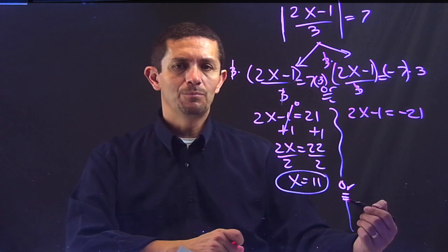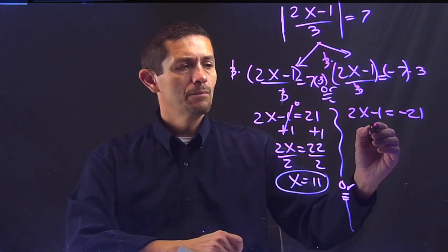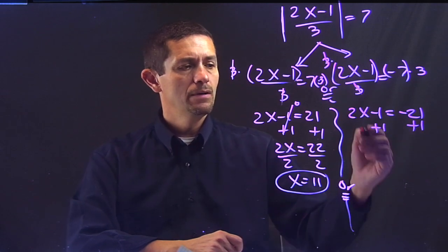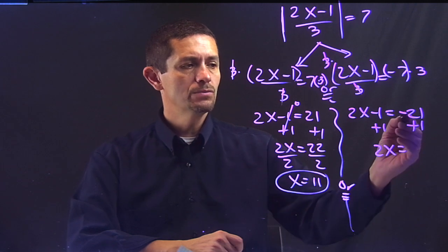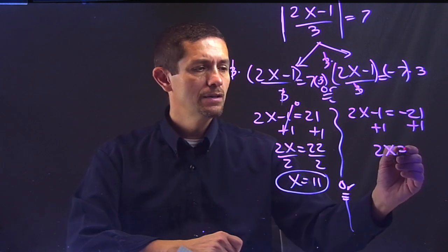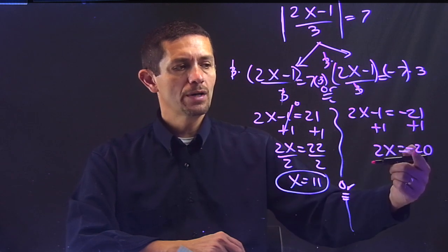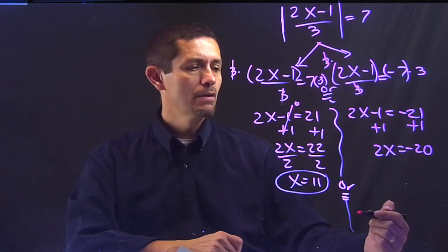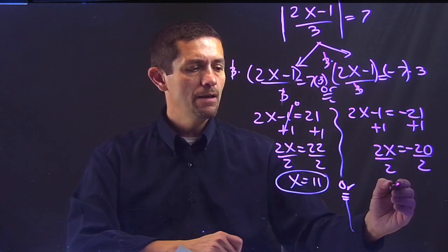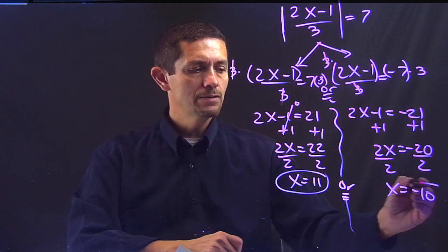Follow up the same process that I did previously. Plus 1. And I'm going to have 2x equals negative 21 plus 1 is negative 20. Excellent. Different sign. You subtract and you keep the sign on the bigger one. Last step divided by 2 and x equals negative 10.